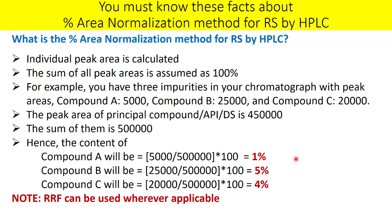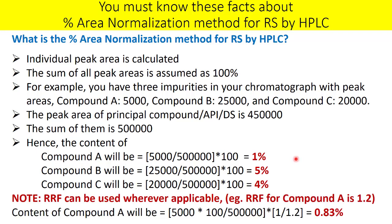If the response for impurities is not similar and you know the relative response factor (RRF), you can also apply the RRF while using the percent area normalization method. For example, if the RRF for impurity A is 1.2, you divide the calculated figure by 1.2 and get 0.83% as the content for compound A.